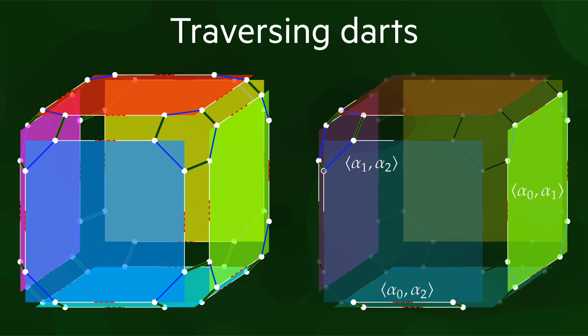So in the example here, the orbit alpha 1 alpha 2 gives us the darts of a vertex, the orbit alpha 0 alpha 2 gives us the darts of an edge, and the orbit alpha 0 alpha 1 gives us the darts of a face.